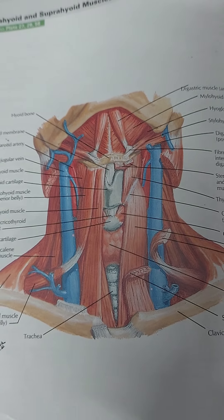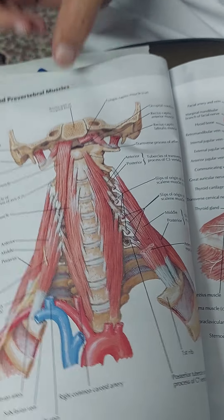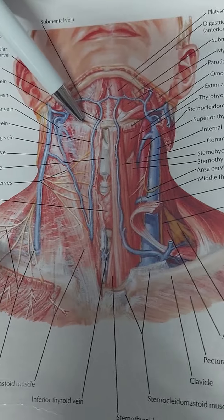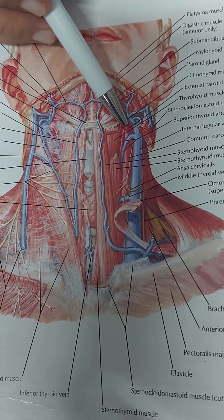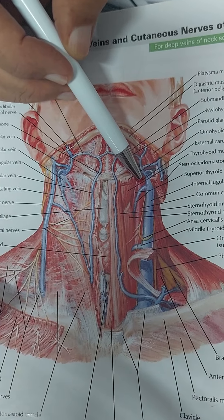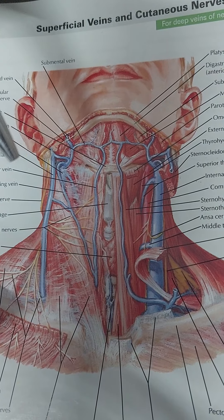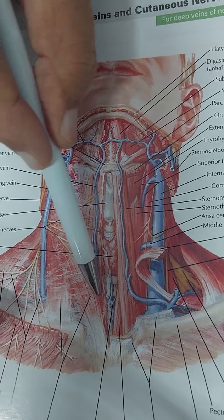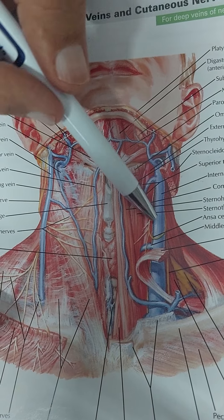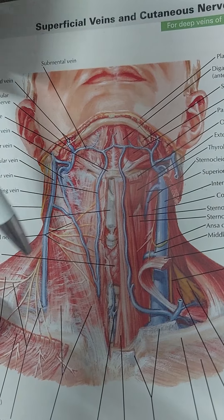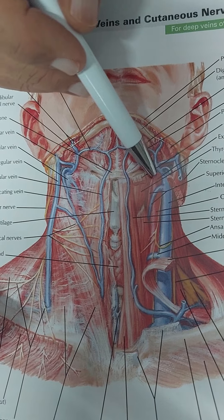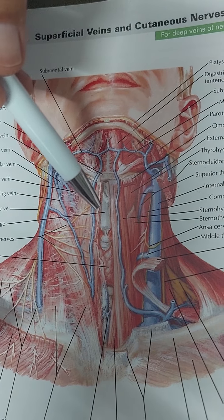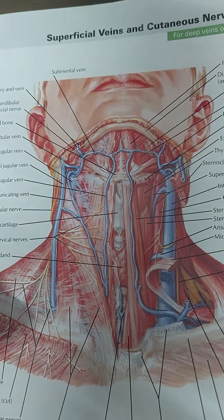Now what are the contents of the triangle? The contents include the superior thyroid artery and superior thyroid vein, then lower down the inferior thyroid vein, and the anterior jugular vein. These two veins may be united with one another by a connecting channel. Also included is the ansa cervicalis. Additionally, pre-tracheal and pre-laryngeal lymph nodes may also be present in this muscular triangle.